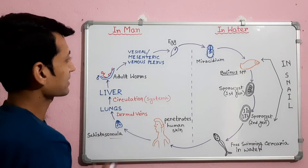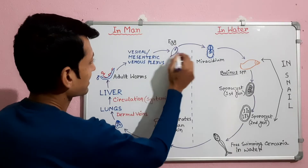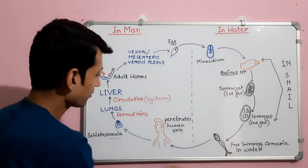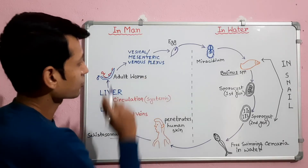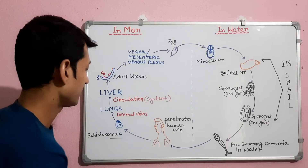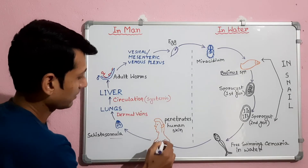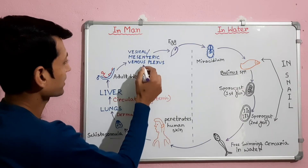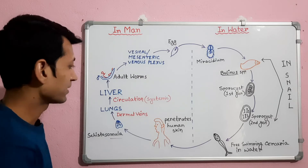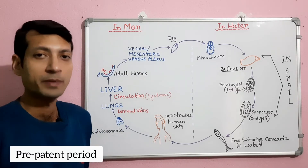The eggs penetrate the venule and urinary mucosa with the help of a terminal spine. As a result, blood with eggs are excreted in urine, completing the life cycle of Schistosoma haematobium. The time from penetration to first egg production is usually 2 to 3 months, known as the pre-patent period.